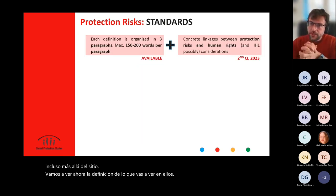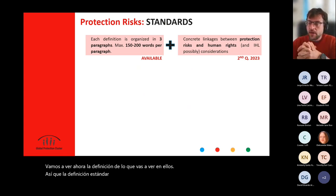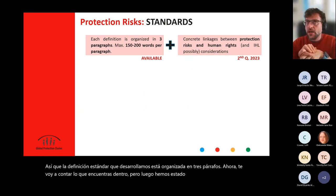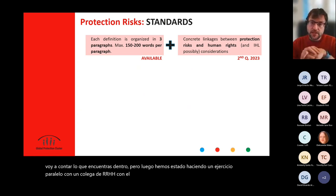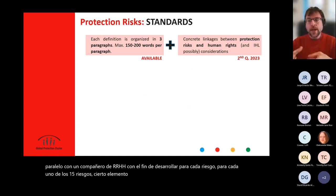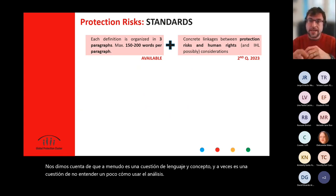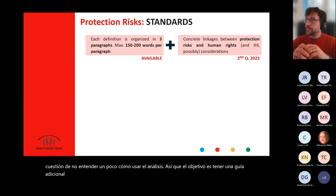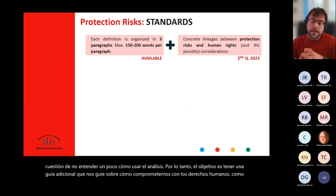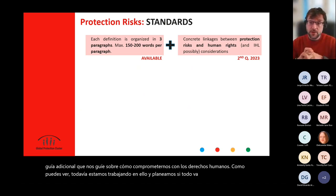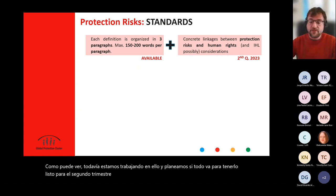The standard definitions we developed are organized in three paragraphs. We've also been doing a parallel exercise with a colleague from OHCHR to develop for each of the 15 risks certain elements to reinforce our human rights engagement. We realize that oftentimes it's a matter of language and concepts, and sometimes it's a matter of not understanding how to use the analysis. The goal is to have additional guidance on how to engage with human rights. We're still working on it and plan to have it ready by the second quarter of 2023.